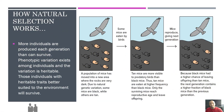Let's take a look at how natural selection works. First, more individuals are produced each generation than can survive — the more individuals produced, the higher the likelihood that the species survives if some organisms die off. Second, phenotypic variation exists among individuals and that variation is heritable. Those individuals with heritable traits better suited to the environment will survive. These physical differences can give certain organisms a better chance of surviving.